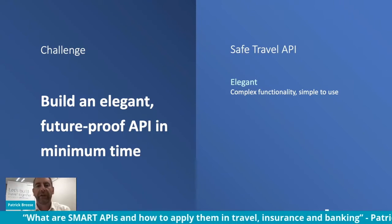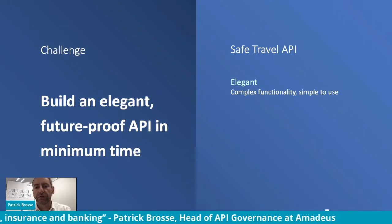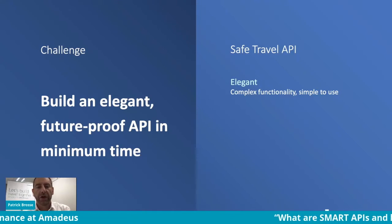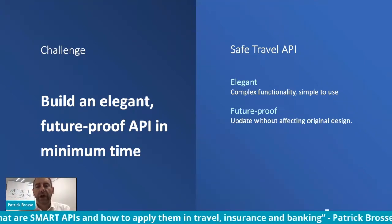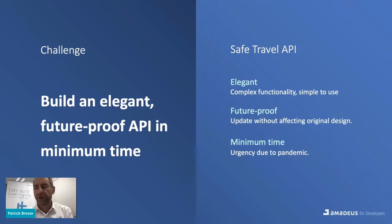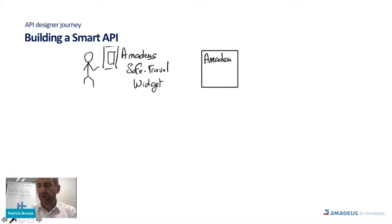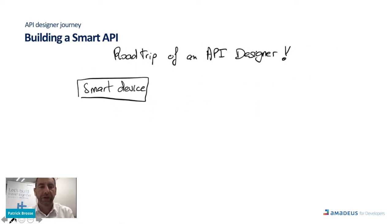Elegant means providing something simple to use but with complex functionality. Future-proof means it starts simple but grows — the idea is how to keep it stable over time. Minimum of time means producing something in a safe methodology. Let's see the API designer journey together to build a smart API, starting by comparing the smart device to the smart API.